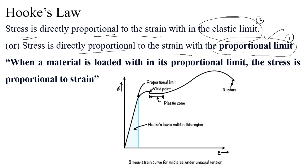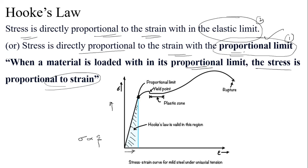When a material is loaded within its proportional limit, the stress is proportional to strain. Looking at the stress-strain curve of mild steel, the proportional limit is the point up to which stress and strain both increase together, so stress is directly proportional to strain up to the proportional limit.